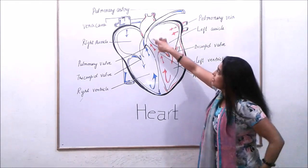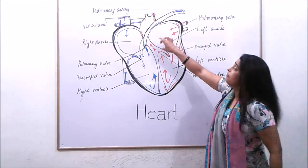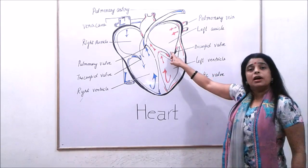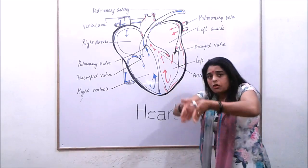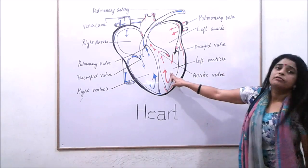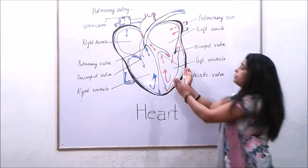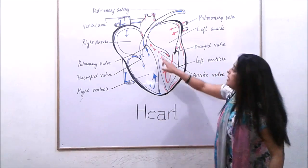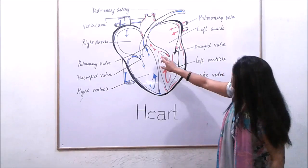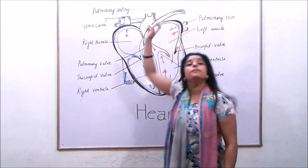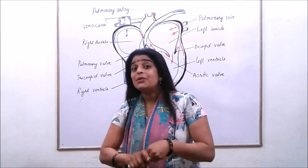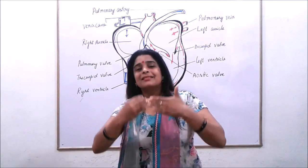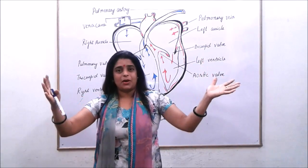The same mechanism is repeated in the other side of the heart. The left auricle receives the blood and when it is filled, it exerts pressure on the bicuspid valve, which opens into the left ventricle. After the left ventricle is filled, it contracts, and the blood flows through the aortic valve to the aorta, which is responsible for transporting blood from the heart to all other body parts.